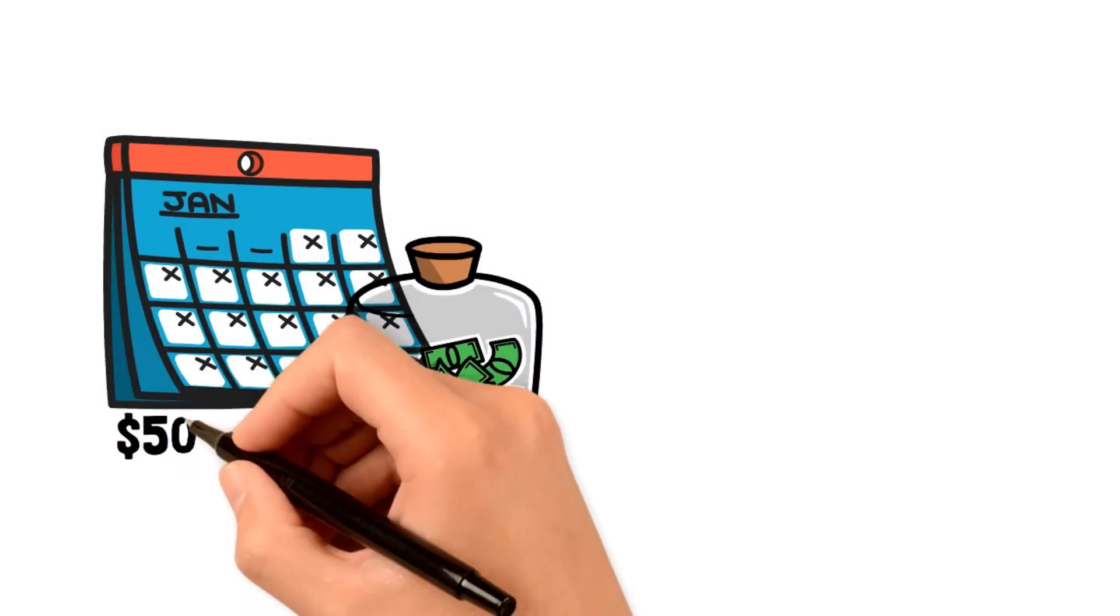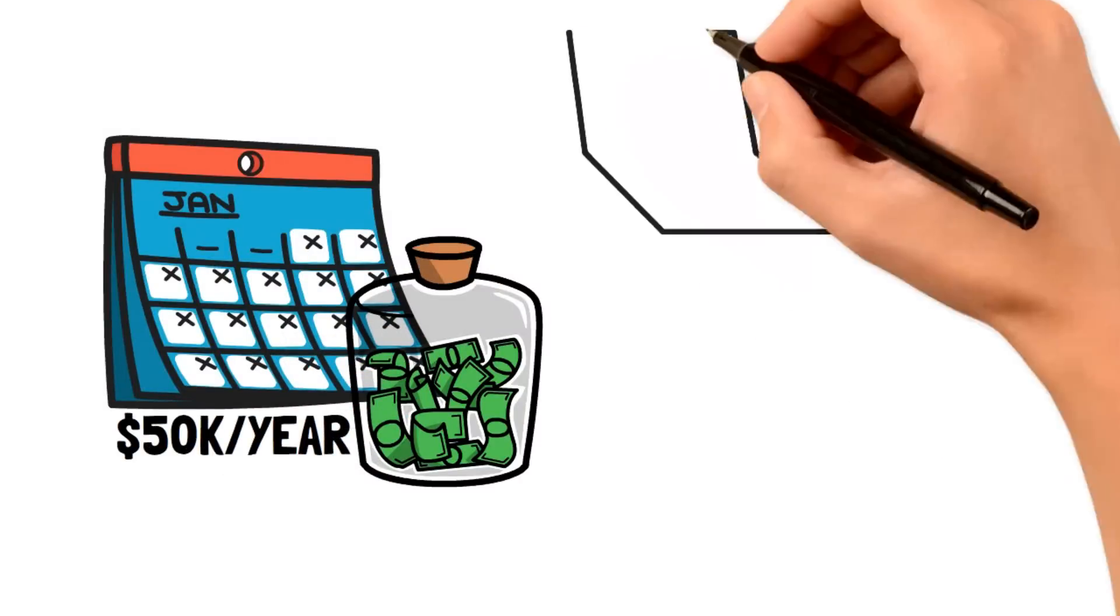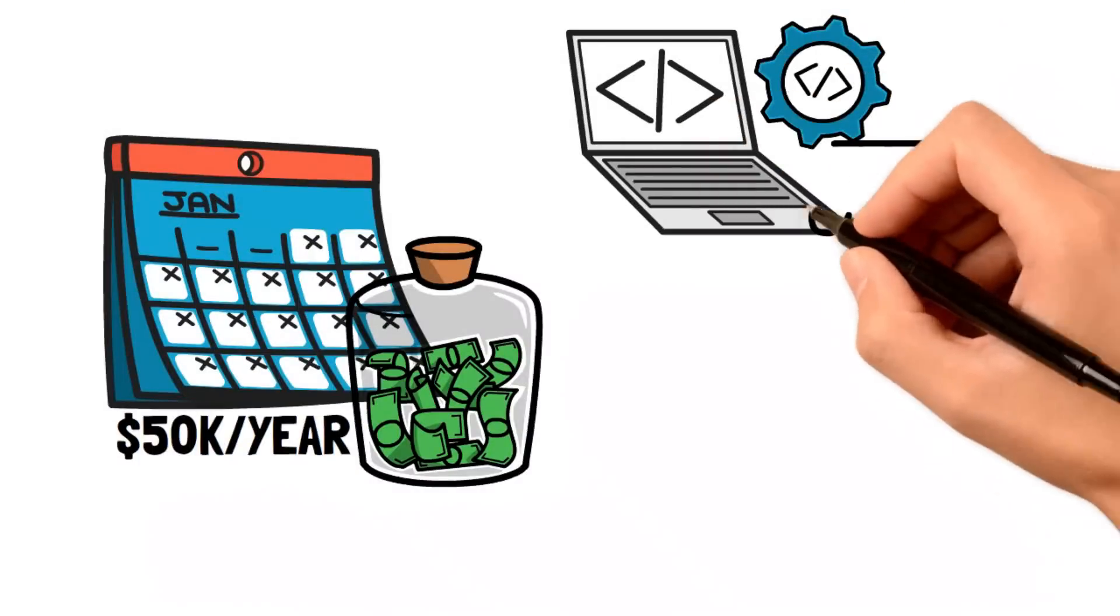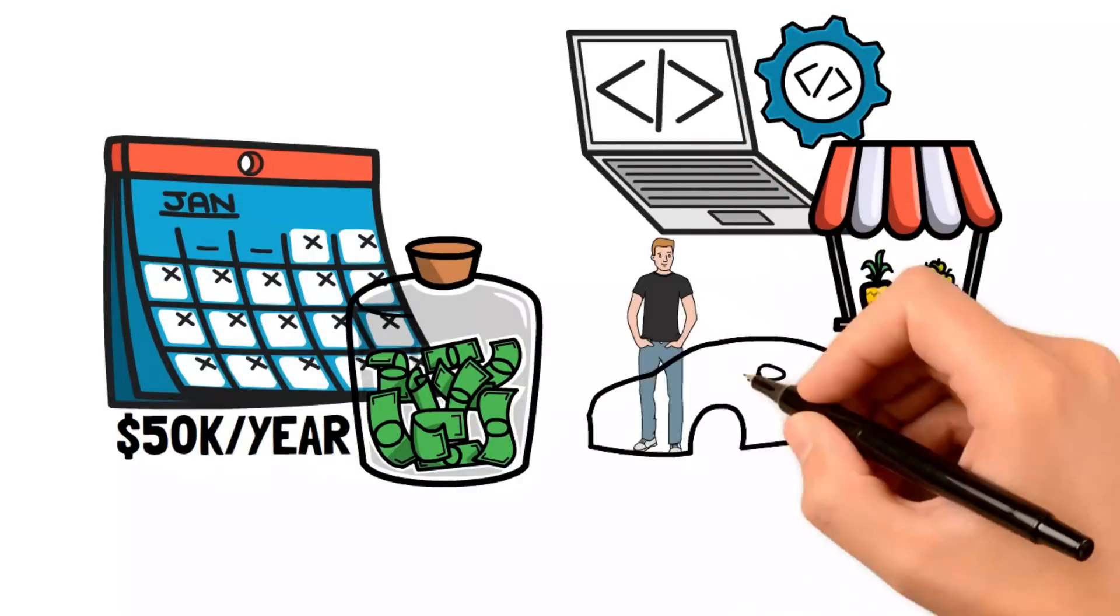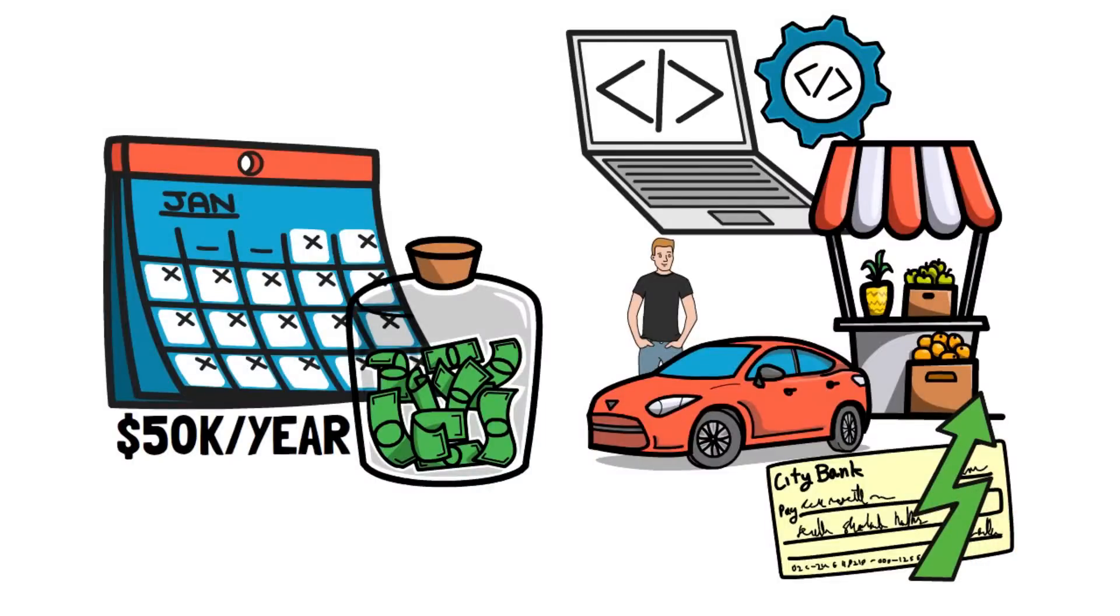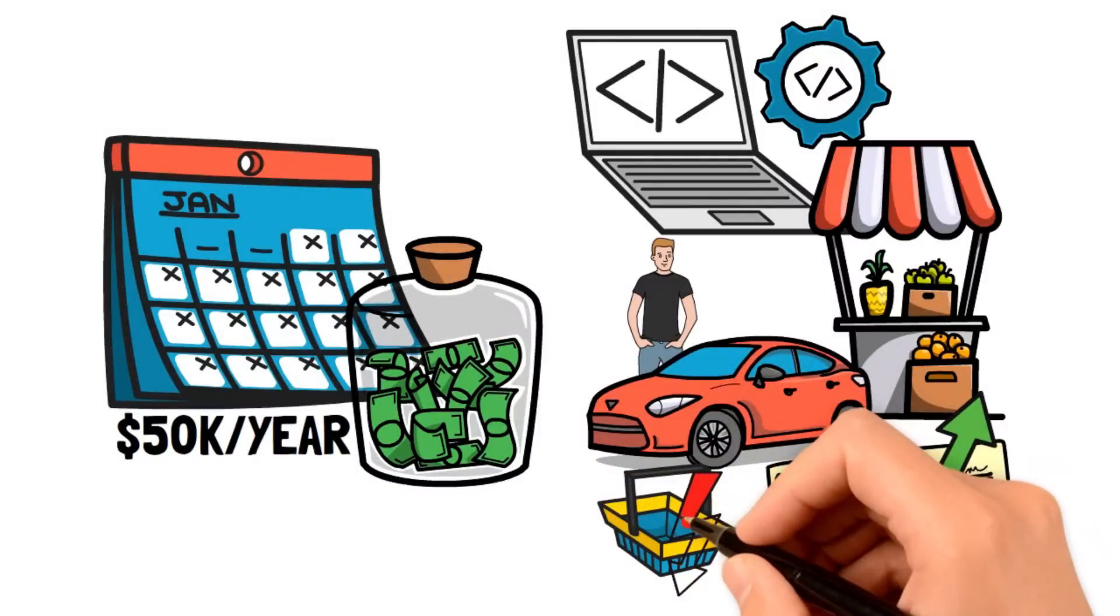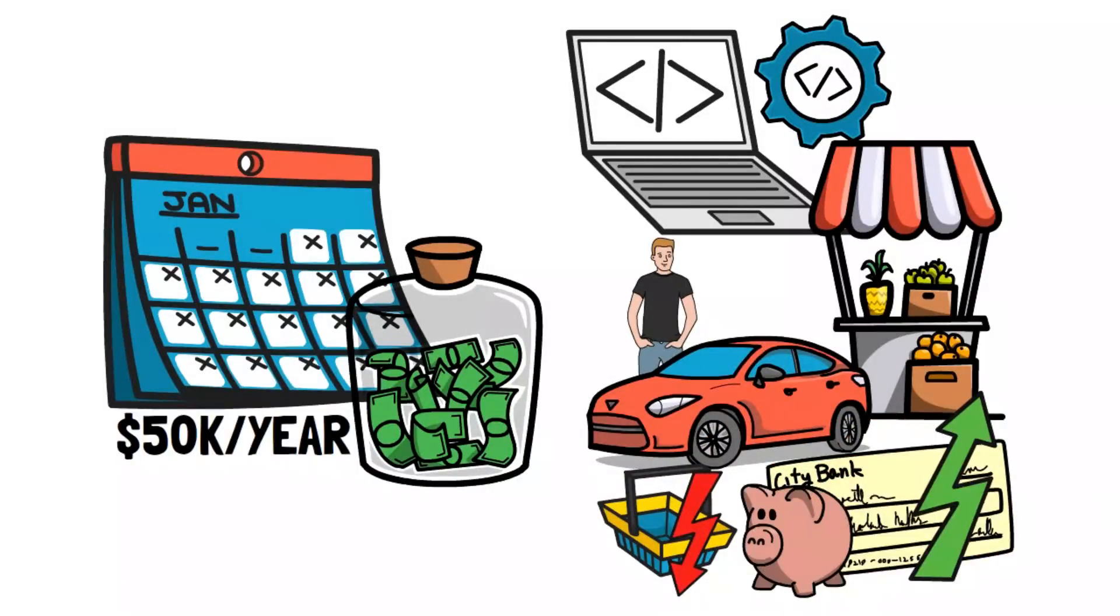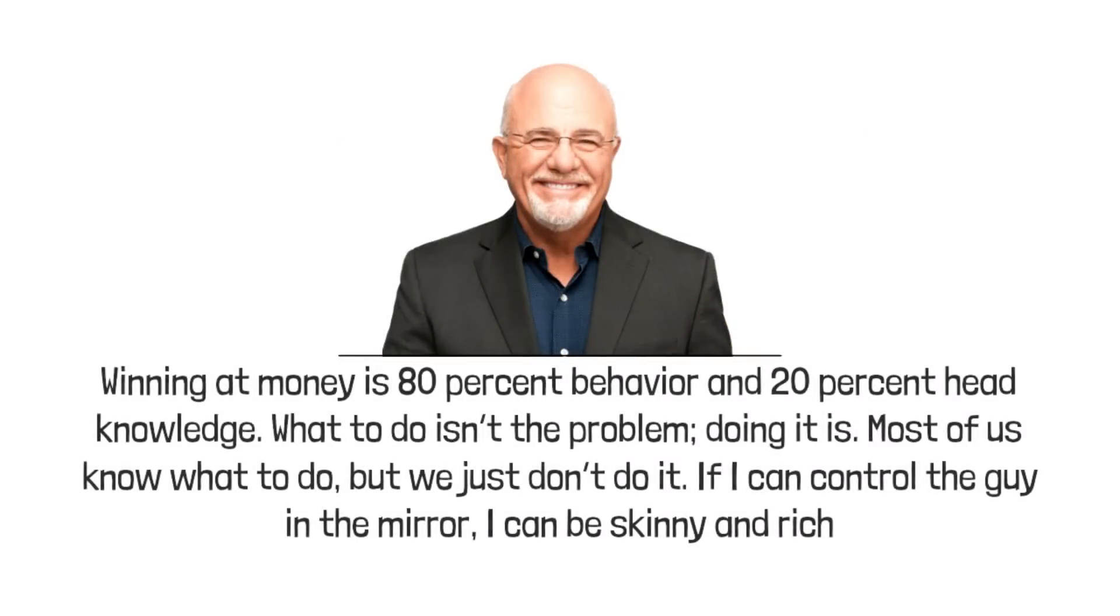If you're not earning up to $50,000 a year, your retirement dream is a bit far-fetched. You have to increase your income, learn a new skill, start a side hustle, or do a side job if you can handle it. It's all a numbers game. You must slowly increase your income while keeping your spending steady or neutral, and then save and invest consistently. But remember, only you can make it happen. As Ramsey rightly said, Winning at money is 80% behavior and 20% head knowledge. What to do isn't the problem. Doing it is. Most of you know what to do, but we just don't do it. If I can control the guy in the mirror, I can be skinny and rich.